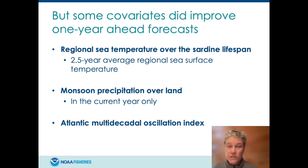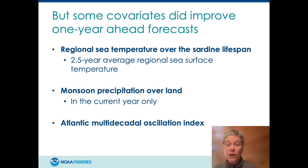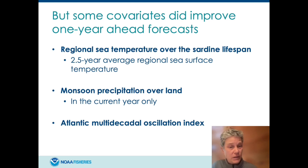Nonetheless, there were three covariates that did improve the forecast and reduce forecast errors. The first was the regional sea surface temperature over the sardine lifespan — the 2.5-year average regional sea surface temperature. This is interesting because a number of other studies have also found that multi-year average sea surface temperature is predictive for sardines and other species. The second was monsoon precipitation over land, and the third was the Atlantic Multidecadal Oscillation Index — the only climate index that improved forecast accuracy.